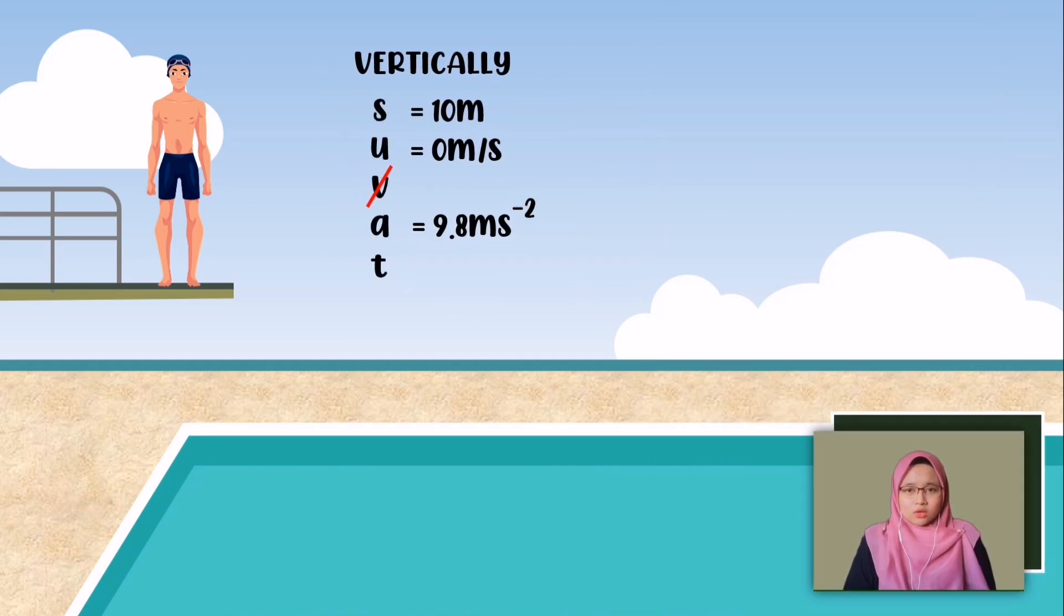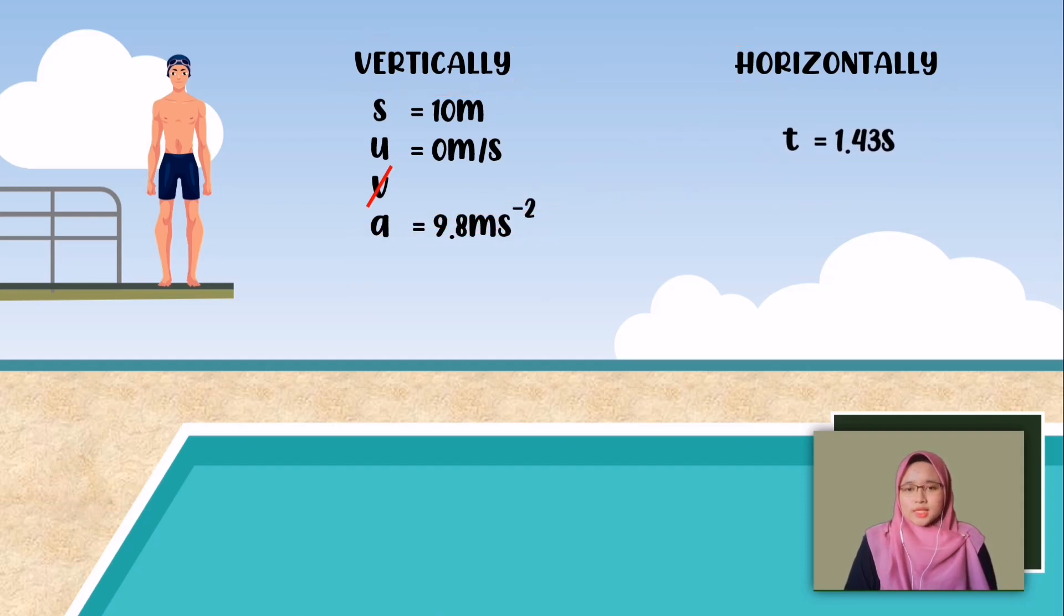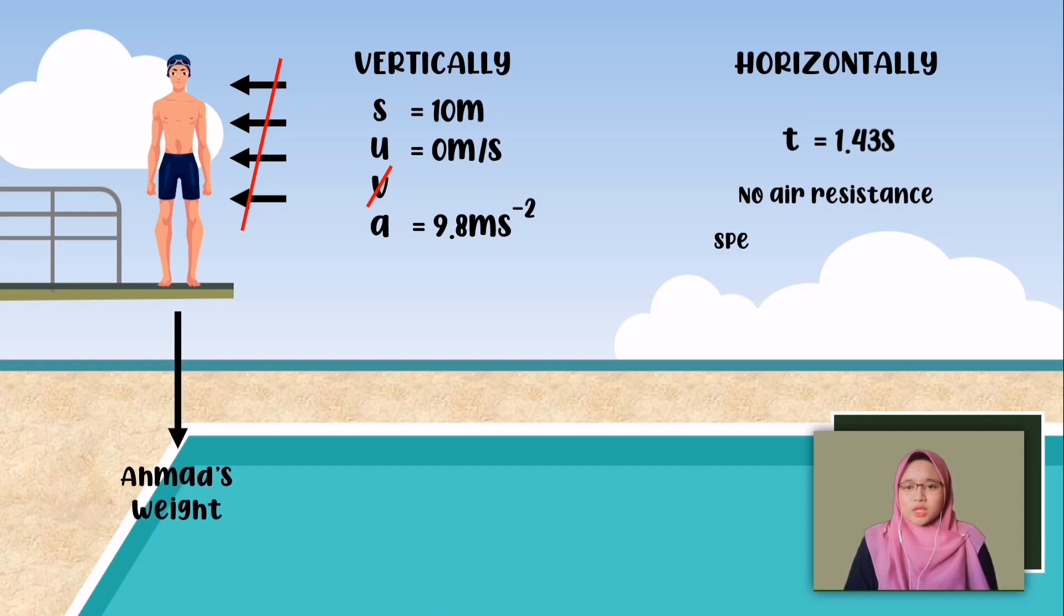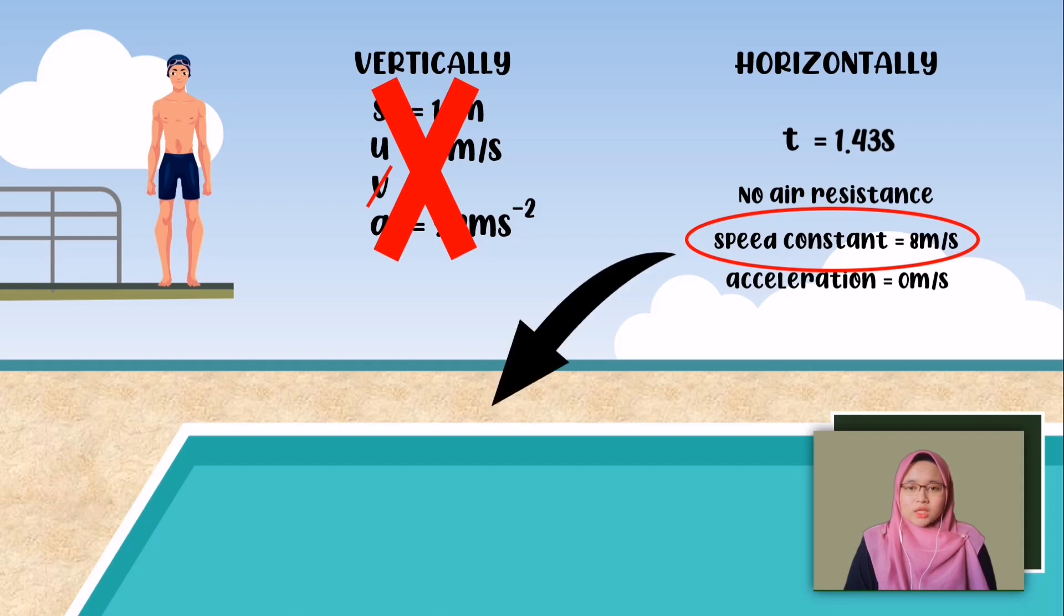So now that we know how long it takes for Ahmad to get into the pool, we can actually use this time which links the vertical and horizontal components together. So I'm going to carry this time over to my horizontal calculations. We act like there is no air resistance. If there is no air resistance, then that means there are no forces acting horizontally on Ahmad. The only force acting on him is his weight, pulling him downwards. Therefore, we can say speed is constant and that means the acceleration is going to be zero. So actually that means there is no need for SUVAT. We know the speed is constant. We can just say that speed equals distance over time. Therefore, the distance is speed times time. So D equals 8 times 1.43, and D equals 11.44 meters.